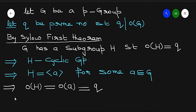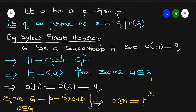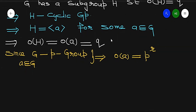Also, since G is a P-group and a is an element of G, by definition of P-group, the order of a must be a power of the fixed prime P — so order of a equals P raised to power r for some r. From both equations, order of a equals q and order of a equals P^r, so q equals P^r.